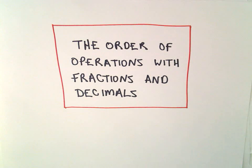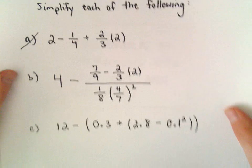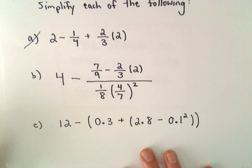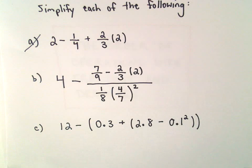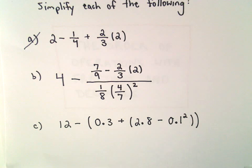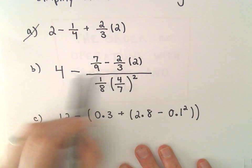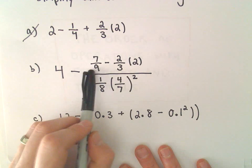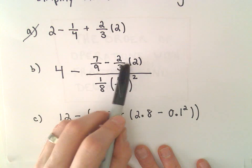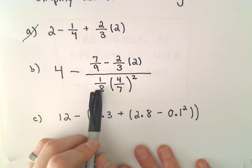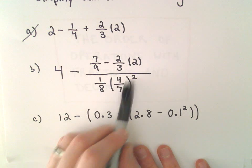All right, so another example here involving the order of operations with some fractions. Part B here, I think this one might actually be a bit of a beast. We'll see what happens. Could be a long problem, but sometimes you have to deal with numbers that are not so friendly. So we've got 4 minus the fraction 7 ninths minus 2 thirds times 2 all over 1 eighth times 4 sevenths squared.